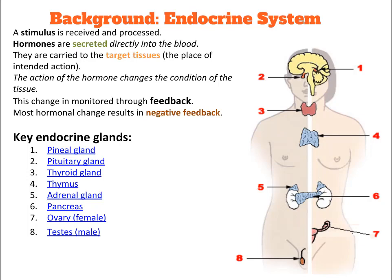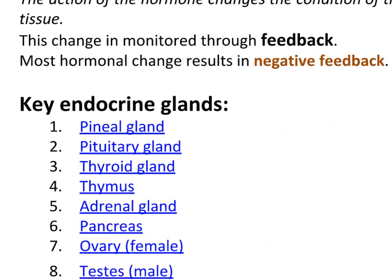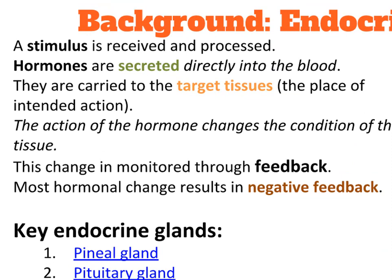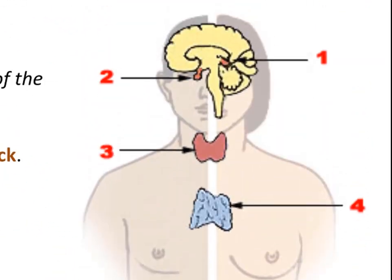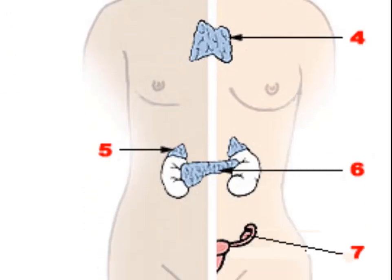Homeostasis is controlled by both the nervous system as well as the endocrine system. The endocrine system consists of a number of glands that release these chemical messengers called hormones. Hormones circulate in the bloodstream but they only affect target cells. Some hormones affect multiple organs while others just affect one. An example of this is insulin, which is released by the pancreas but targets cells in the liver. There are a number of key endocrine glands highlighted, and it's important to understand their general location, particularly the sex glands — the ovaries and the testes.